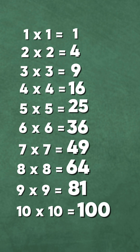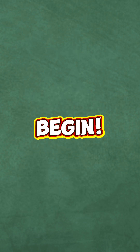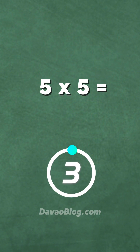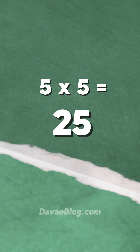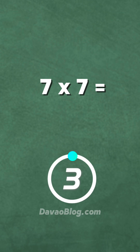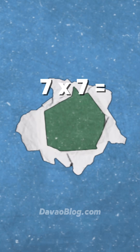Now let's test your memory. 5 times 5 is equal to... 25. 7 times 7 is equal to... 49.